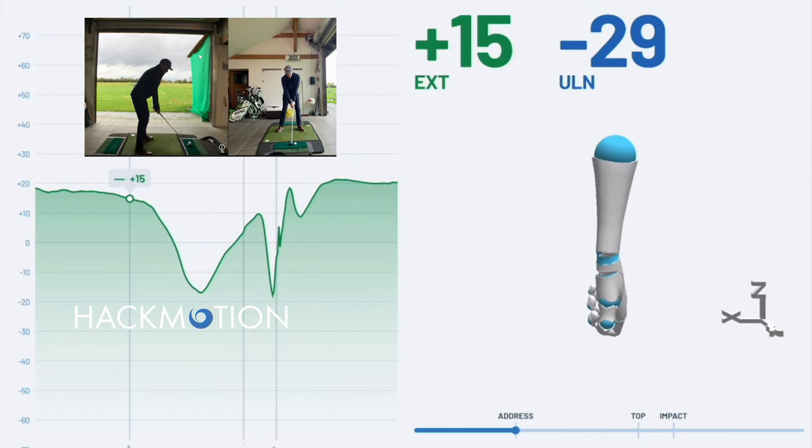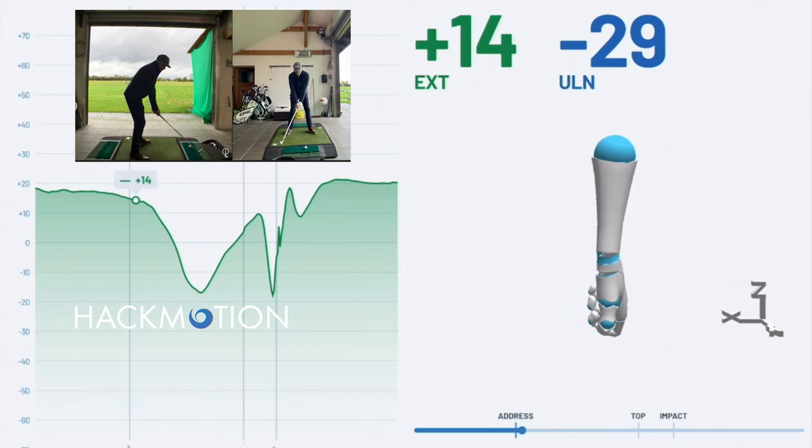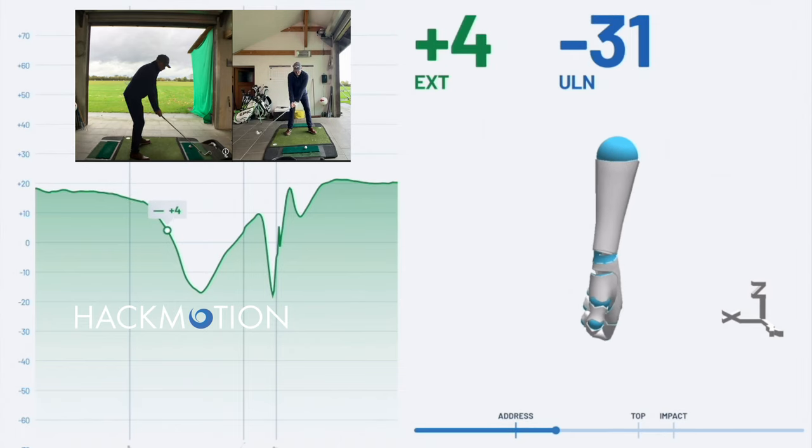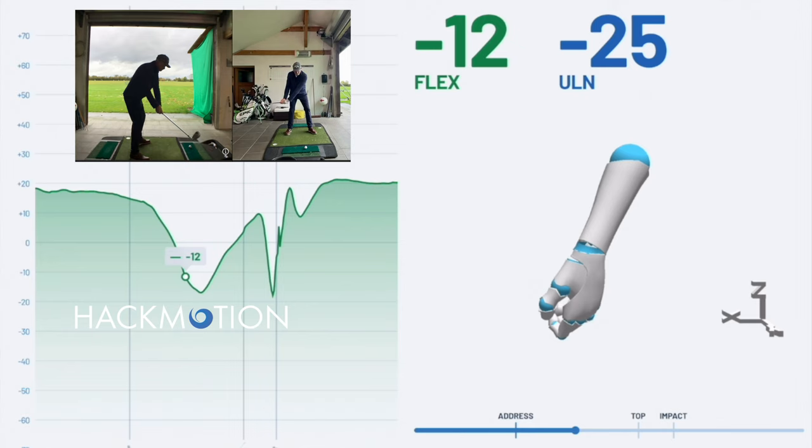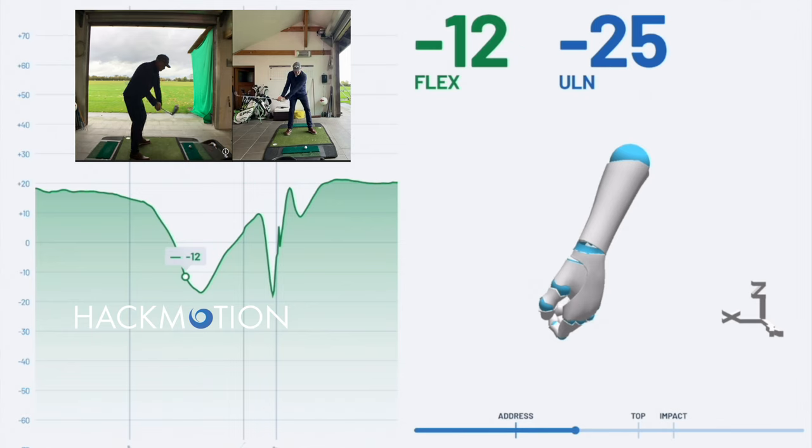And then as you work through the swing and you can see this is my swing in the backswing I'm actually going into flexion pretty quickly after starting the backswing. So the act of lifting and rotating the wrist in the backswing to get the club on plane is actually causing my wrist to go into flexion.